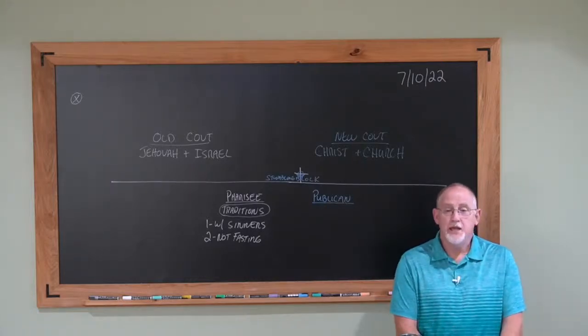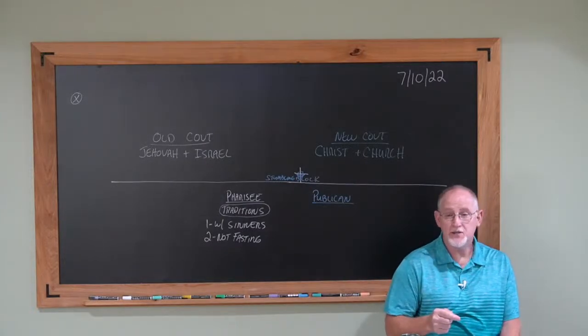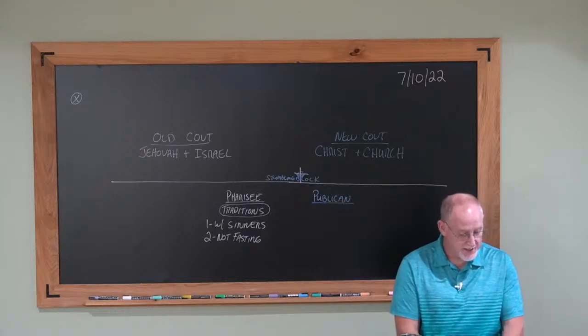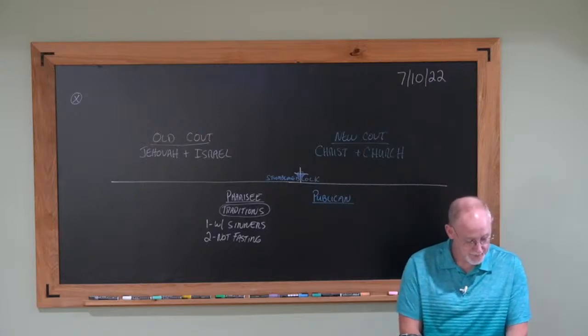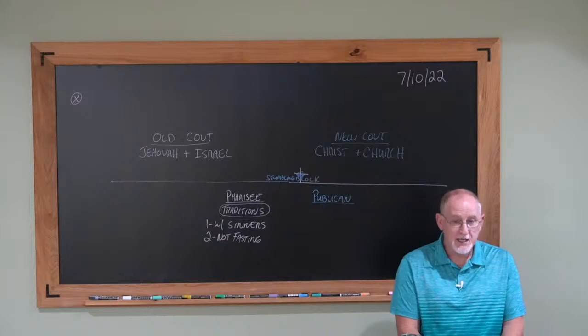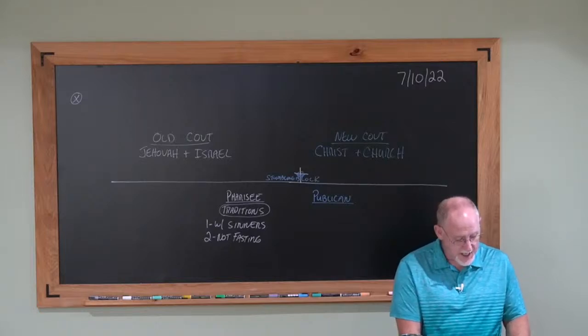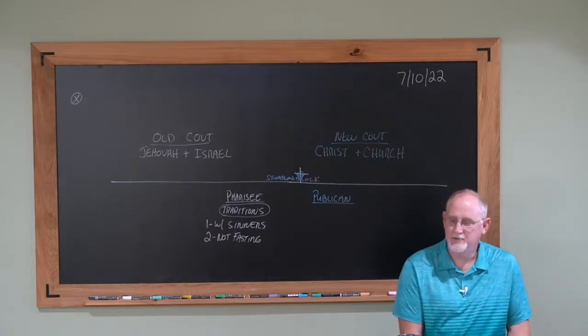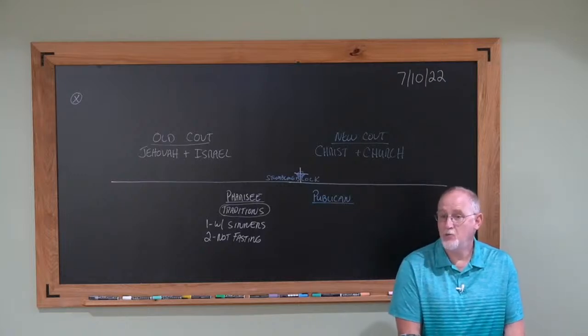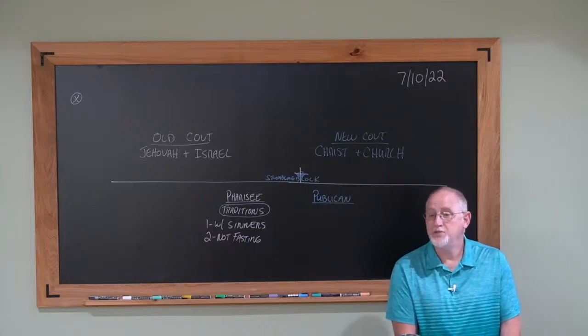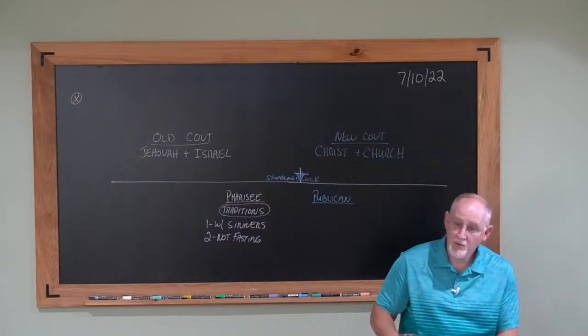In Hosea 6:6 He says, For I desired mercy and not sacrifice, and the knowledge of God more than burnt offerings. What's He saying there? He's saying that they missed the point of the law. The point of the law, He didn't want all the sacrifices. He wanted obedience. He wanted them to worship Him, to glorify Him. The point of the law wasn't that you fast more and more. The point of the law was that you glorify God.